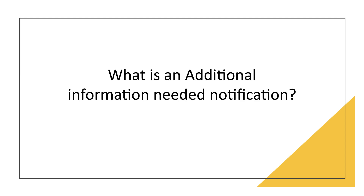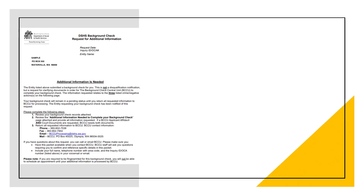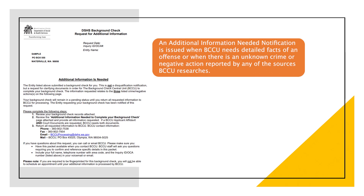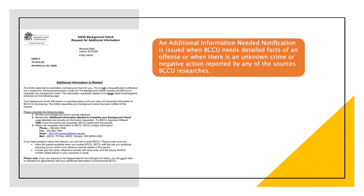What is an additional information needed notification? An additional information needed notification is issued when BCCU needs detailed facts of an offense, or when there is an unknown crime or negative action reported by any of the sources BCCU researches.